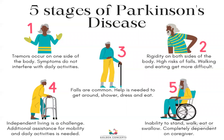There are five stages of Parkinson's disease. Stage 1: tremors on one side of the body, not interfering with daily activities. Stage 2: rigidity on both sides, high risk of falls, walking and eating become more difficult. Stage 3: falls become very common, help is needed to get around, shower, dress, and eat. Stage 4: independent living is a challenge and additional assistance for mobility and daily activities is needed. Stage 5: inability to stand, walk, eat or swallow — completely dependent on a caregiver.